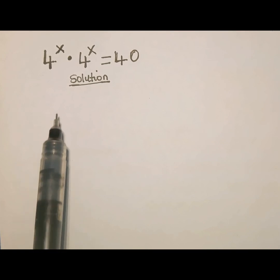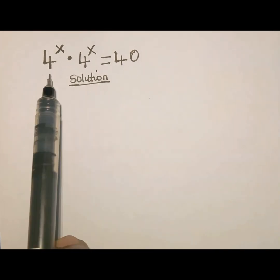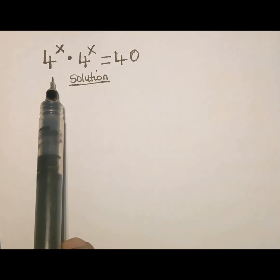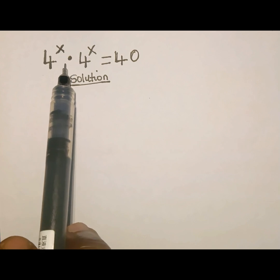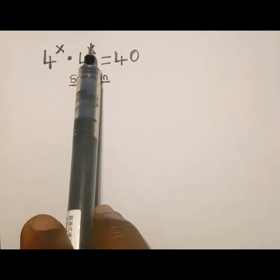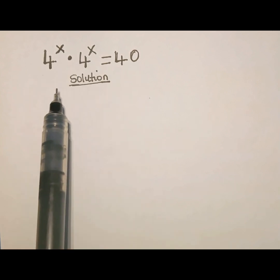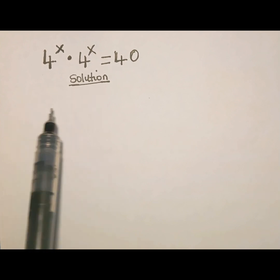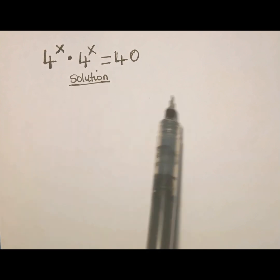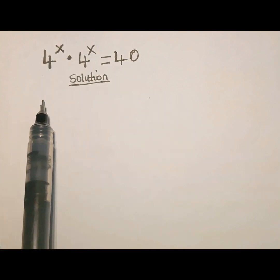Hello everyone, you are welcome back again. We are going to solve for the value of x from this equation. We are given that 4 raised to the power of x multiplied by 4 to the power of x is equal to 40. This is an exponential equation because the variable we are looking for appears in the exponent.